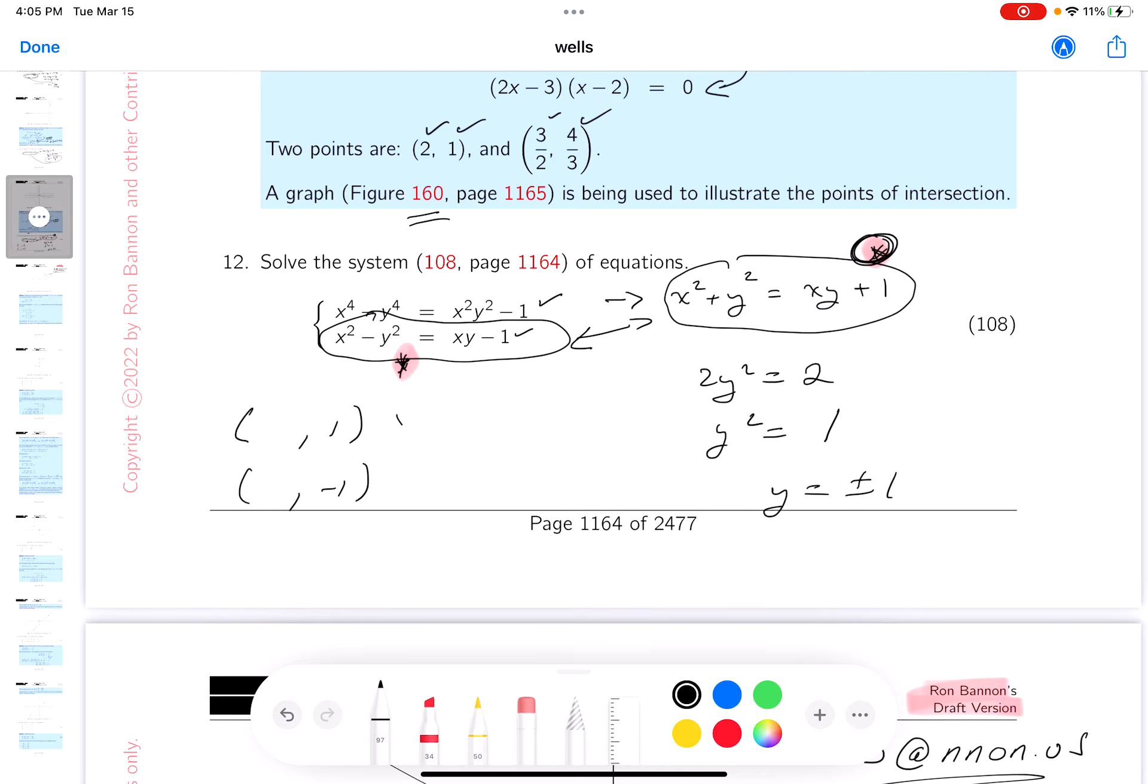So x squared plus one equals, again y is one, you get x plus one. And what do you get there? You get x squared minus x equals none, which means x times x minus one equals zero. I get two solutions there: zero and one. I'm done with that.